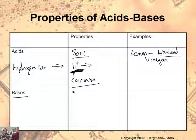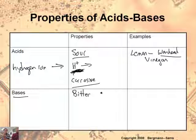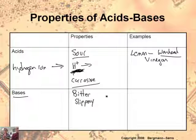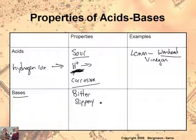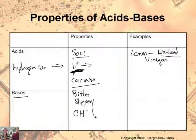And then bases — those tend to taste bitter, and when you touch them they feel slippery. I've heard that since you have oils in your hand, when you put a base on an oil it actually turns it into soap — a process called saponification. So you're actually turning the oil in your hand into soap, and that's what feels slippery. And bases produce a chemical called hydroxide — that's one of those polyatomic ions we learned about a while back.